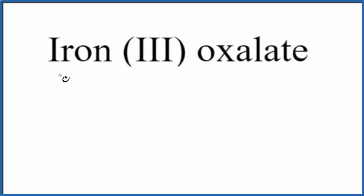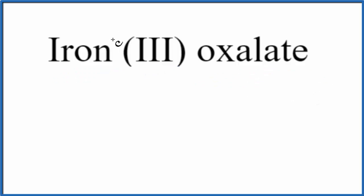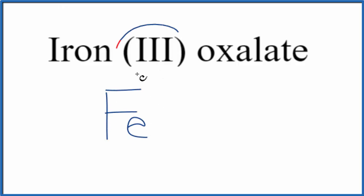In this video we'll write the formula for iron(III) oxalate. The first thing we'll do is write the element symbol for iron, which is Fe. We know that Fe is a transition metal, and its charge here is 3+ because they give us the Roman numeral 3.